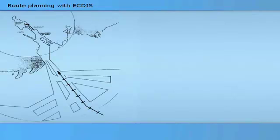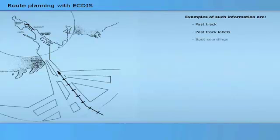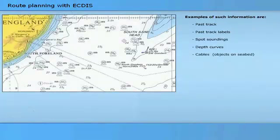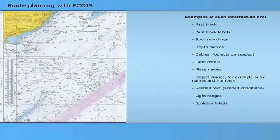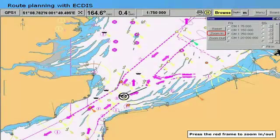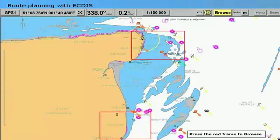All other information in the chart database may be displayed on operator request when needed. Examples include: past track, past track labels, spot soundings, depth curves, cables, land details, place names, object names such as buoy names and numbers, seabed text, light ranges, scale bar labels, and latitude/longitude scale. The zoom function allows the navigator to select the appropriate chart scale, and the pan function allows the navigator to move the current chart on screen to show the appropriate chart segment.